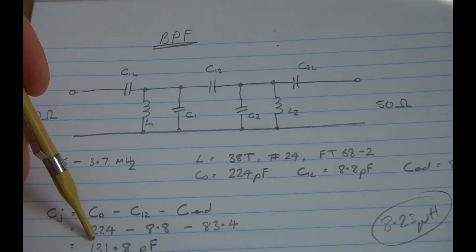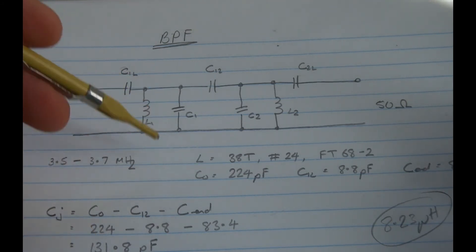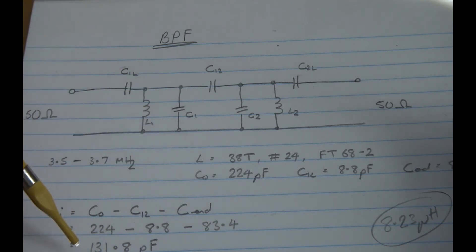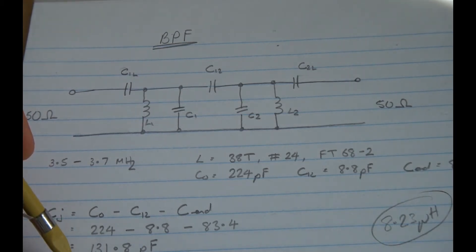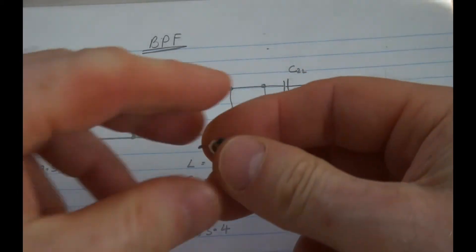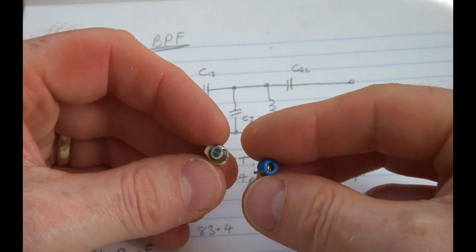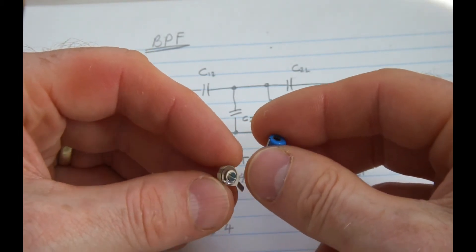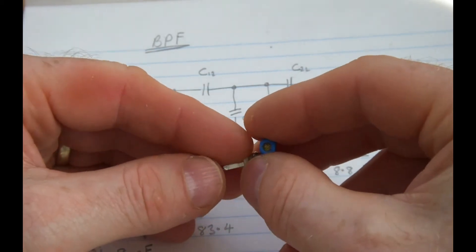Now, when you make up a filter like this, what I tend to do, and I'm not the person who invented this one, but it's certainly what I have been following, is rather than using, say, 131 picofarads, I'll use, in this particular case, 120 picofarads in parallel with a small trimmer. And they all come in different shapes and sizes.